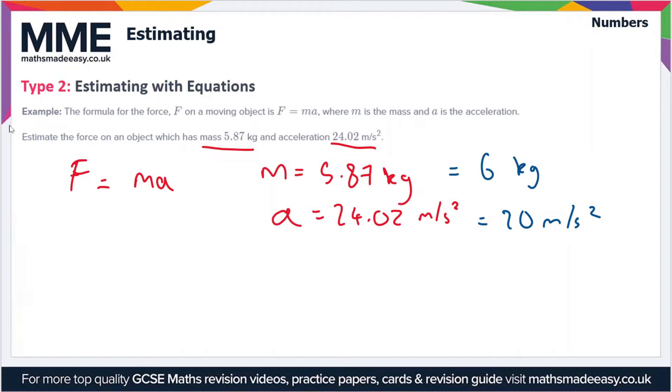What we're going to do now is write the expression force equals mass times acceleration. So that's 6 times 20. Seeing as though we're using an approximation here, we can say that the force is approximately equal to 120. Now it doesn't say it in the question but the units for force are newtons.